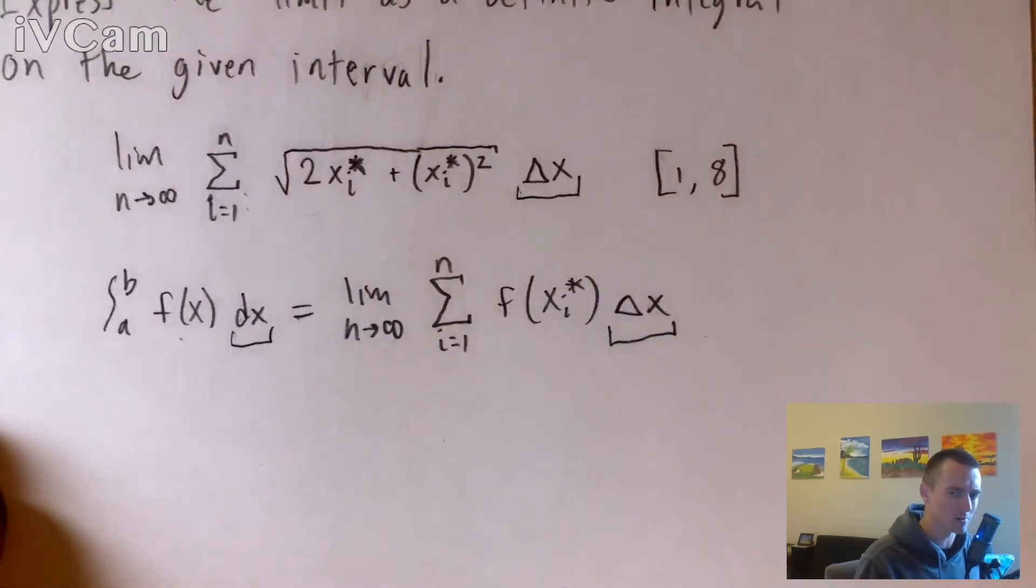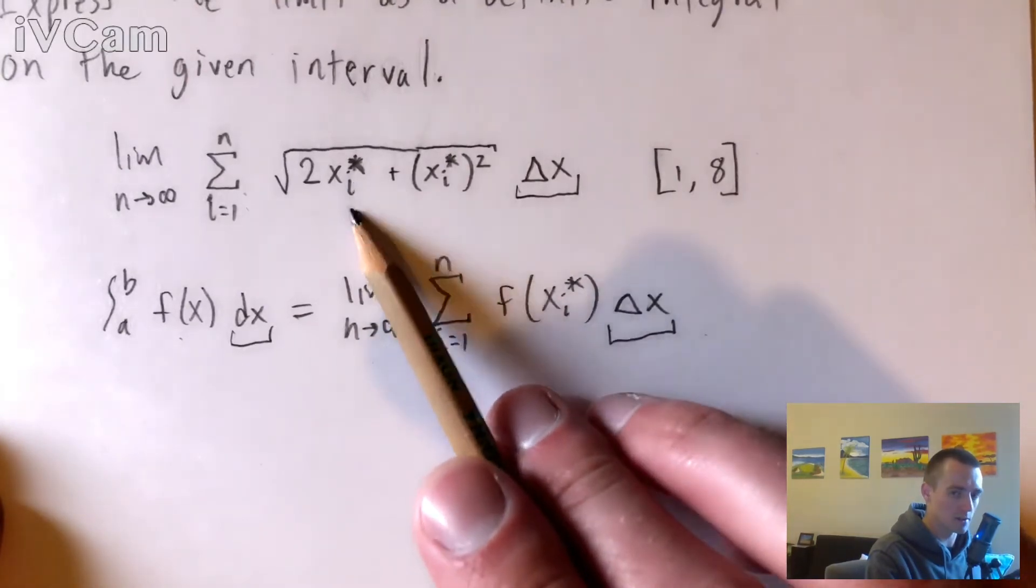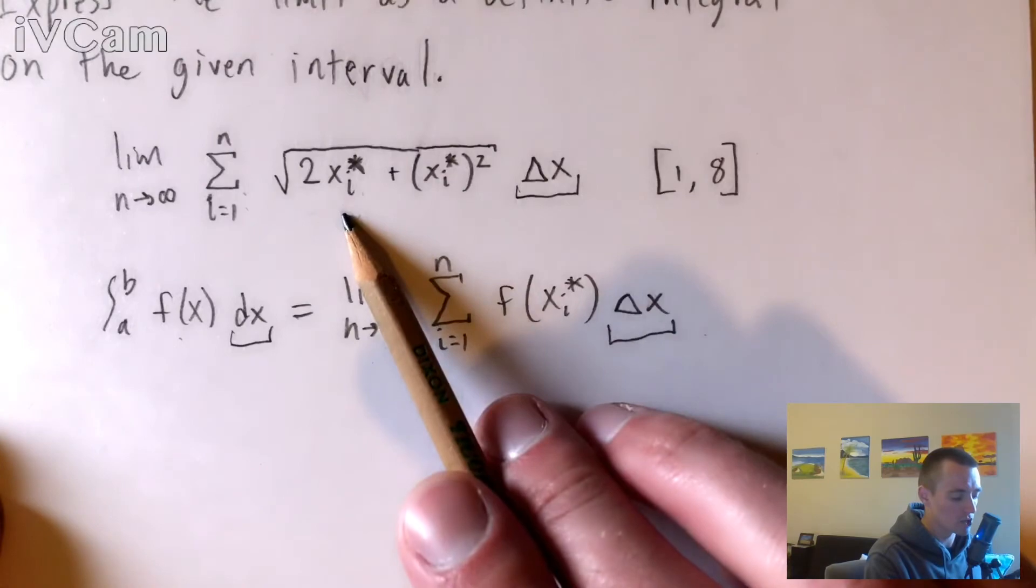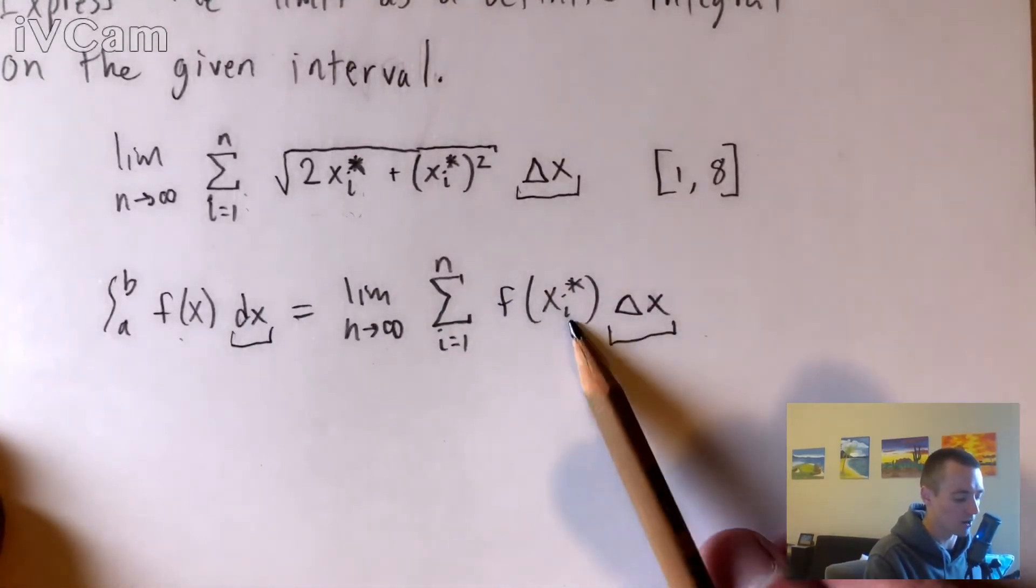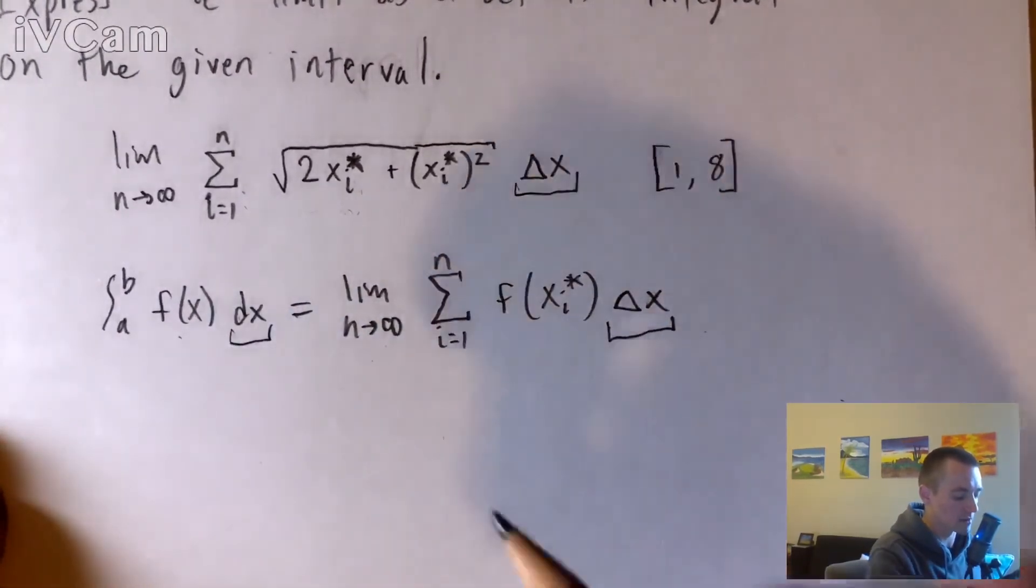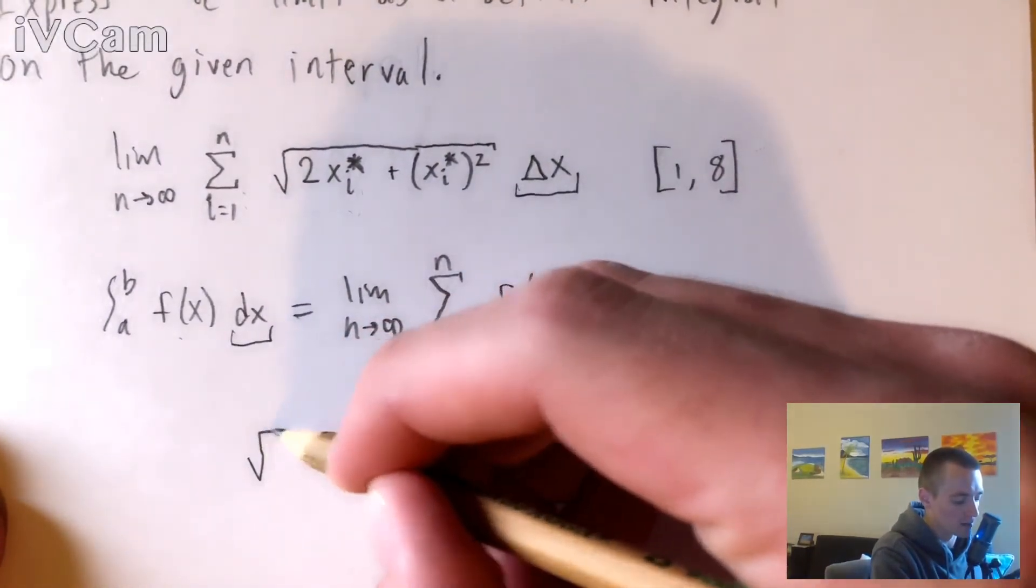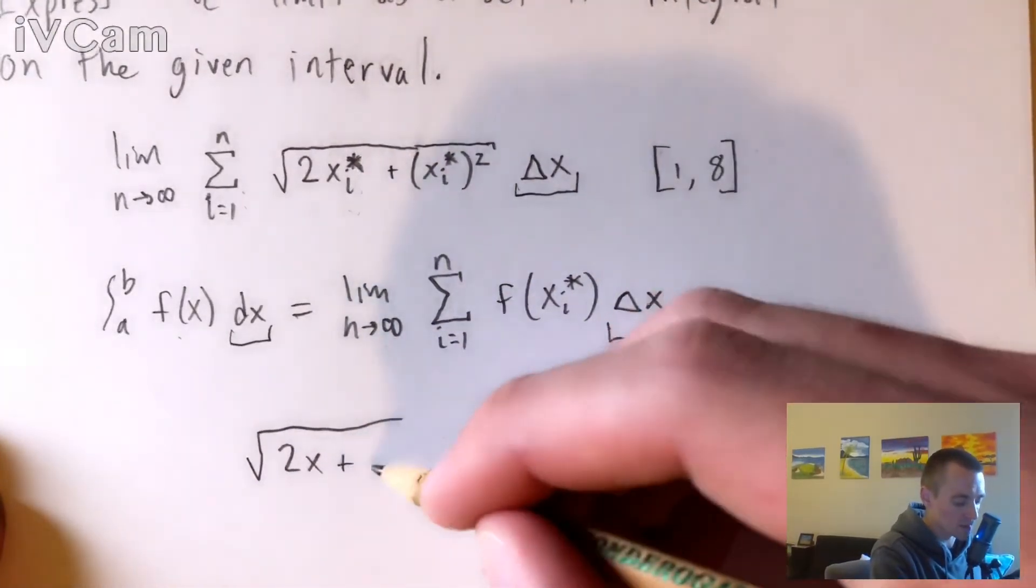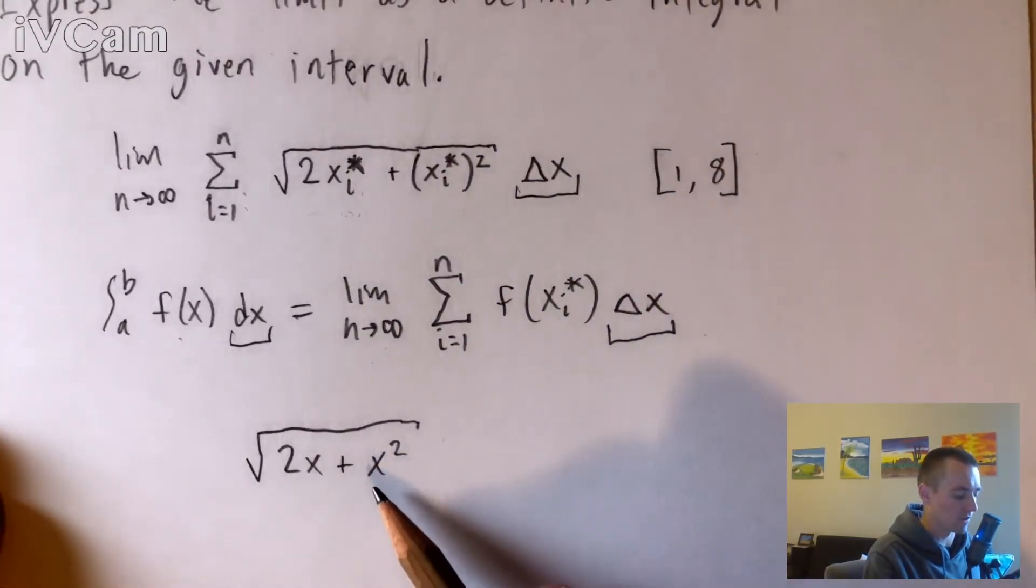So really all that comes down to is taking the xi stars from this equation up here and basically changing those to an x so that we can get our f of x instead of our f of xi star. Changing our xi star to just x is essentially going to give us f of x. So that is going to mean that our f of x is going to be the square root of 2x plus x squared. Right? So this gives us f of x.